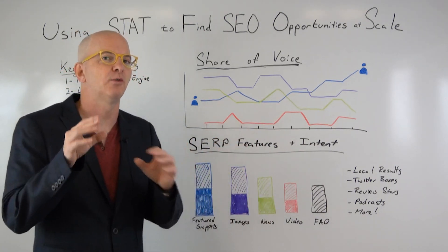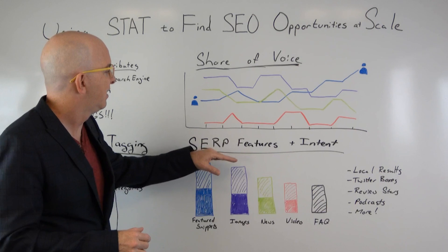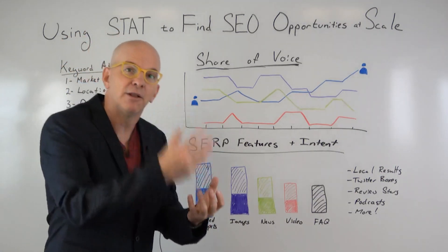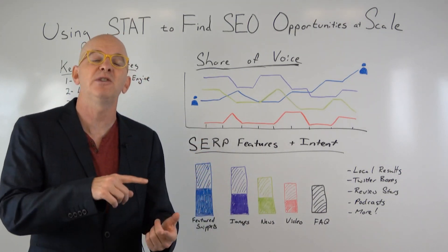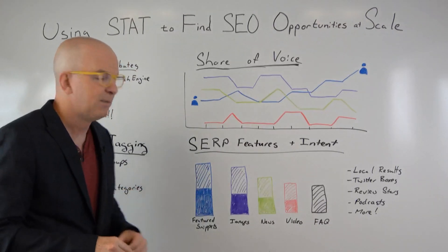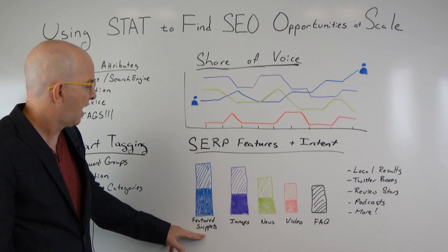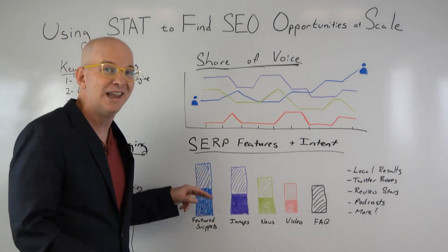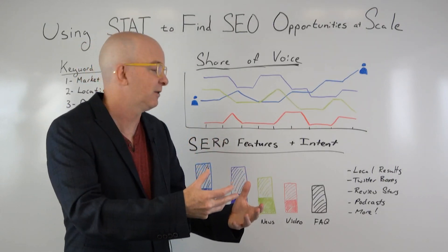My favorite part — and this is where the true power comes in for informing your content strategy — is the analysis of SERP features and intent. What STAT will do is, out of the thousands of keywords you put in, it will analyze the entire SERP of each one, collect all the SERP features it finds, and tell you exactly what you own and don't own, and where your opportunities are. For example, if you track a bunch of keywords in a cohort and see most results have a featured snippet, STAT shows you what you own and what you don't. You can click into what you don't own and see the exact featured snippets your competitors own, so you can build content strategy around stealing those.